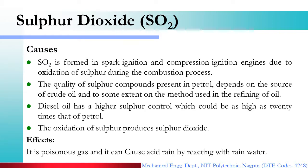SO2 is a poisonous gas that can cause a number of problems to human beings. At the same time, SO2 reacts with water and creates H2SO4, which is responsible for acid rain. So sulfur dioxide is also a dangerous pollutant.